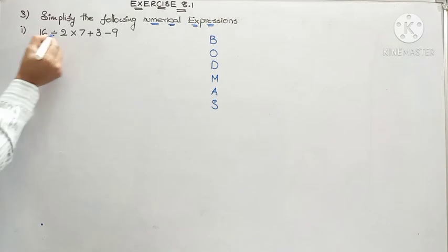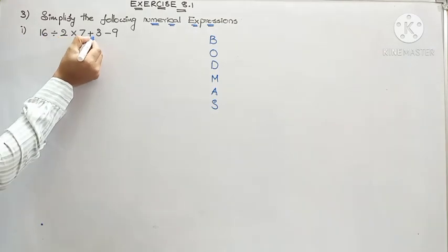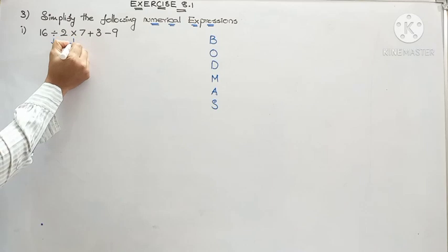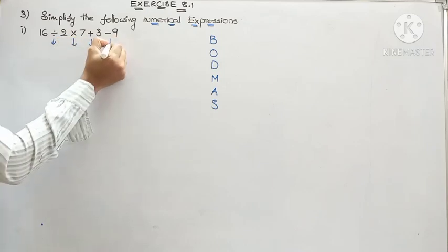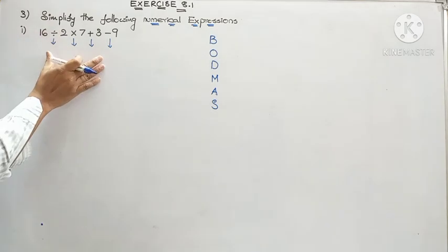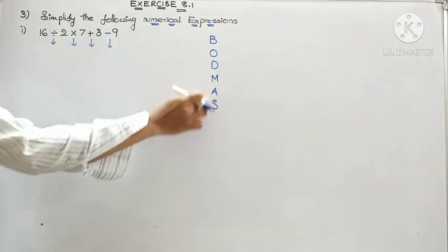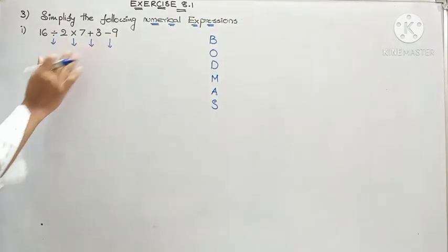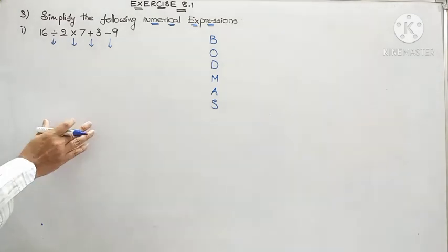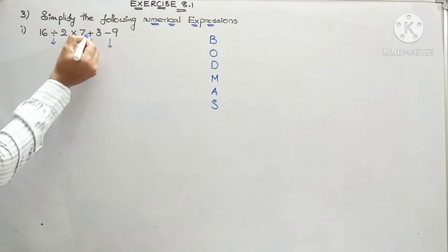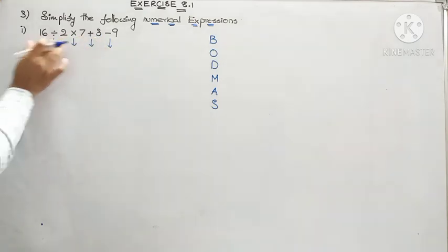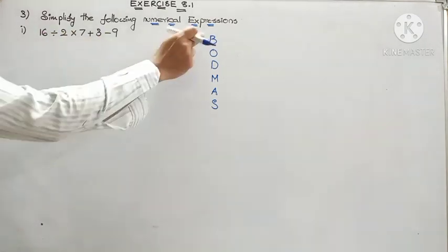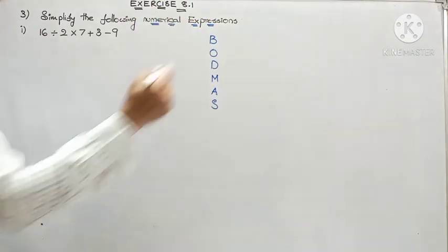Simplify the following numerical expressions. Yesterday we dealt with the meaning of expression and numerical expression. So until you are confident with this rule, write it in rough. You do not need to copy it — only the solution is required. Look: 16 ÷ 2 × 7 + 3 - 9. The basic mathematical operations here are division, multiplication, addition, and subtraction. As I said yesterday, it is not compulsory to have all operations in a given question — they may come randomly according to convenience.